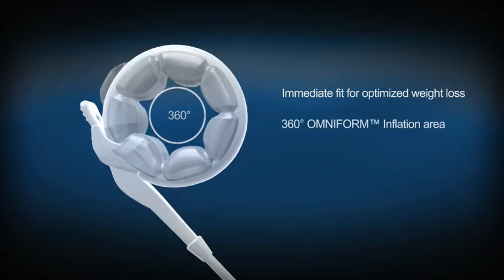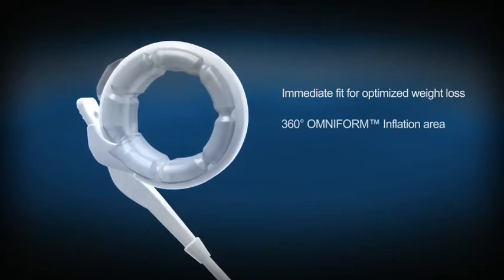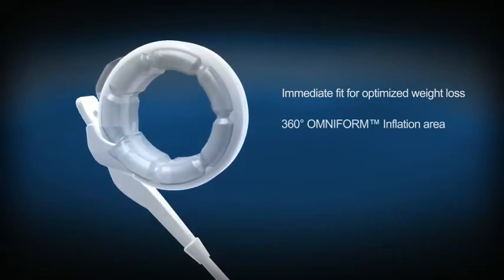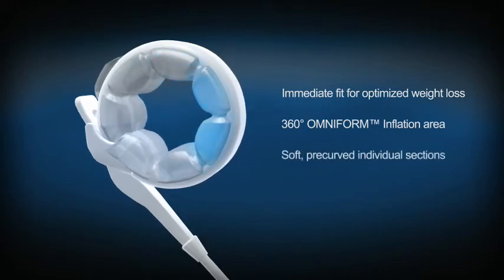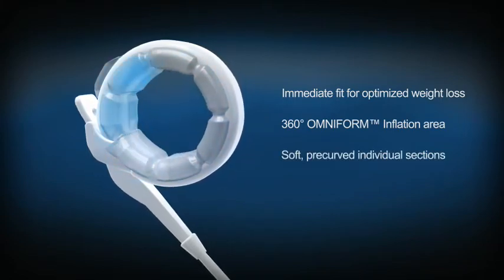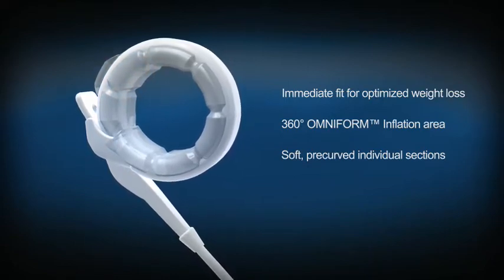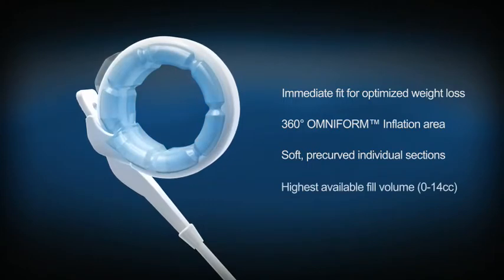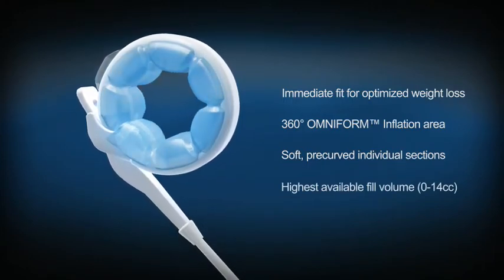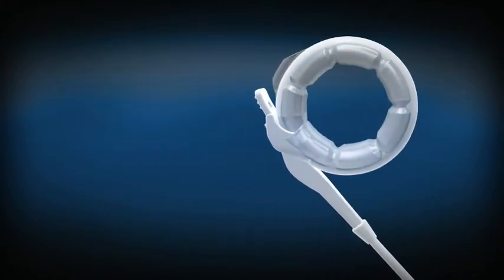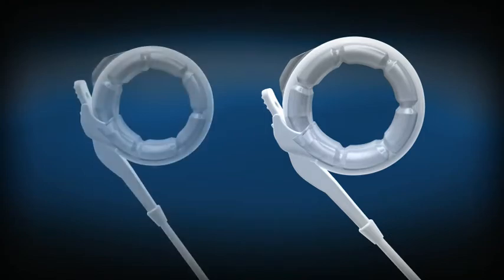Omniform inflation provides 360 degrees of pressure evenly delivered throughout the band for complete stomach coverage. Soft and flexible pre-curved individual sections help minimize the potential for leaks from creases or folds. The highest fill volume available leads to greater flexibility and customized adjustments. Available in two sizes to accommodate different anatomy and individual needs.